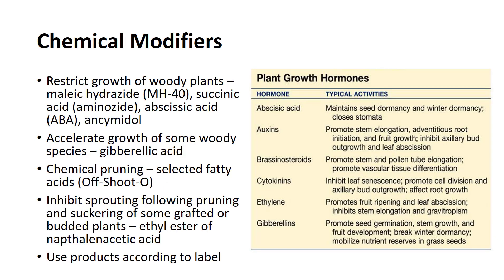Shoot growth in a few species can be reliably modified by chemical means in a nursery setting. Some chemicals are effective in reducing growth of shoots, while others are effective in accelerating shoot growth. Still other materials can be used as chemical pruning agents or for control of sprouting.